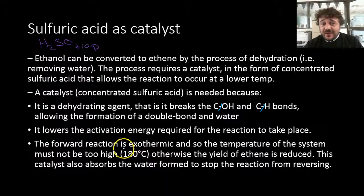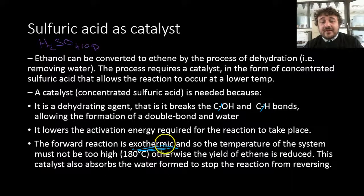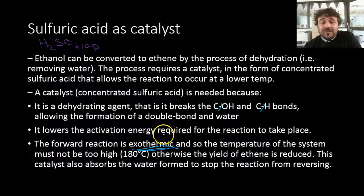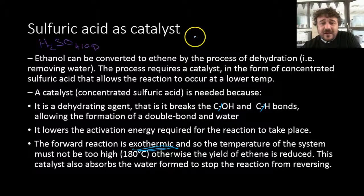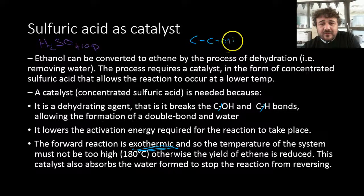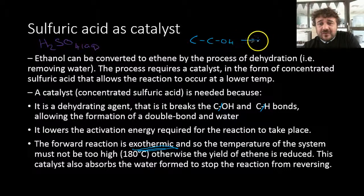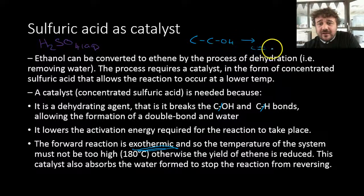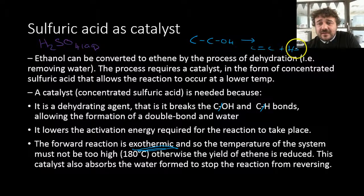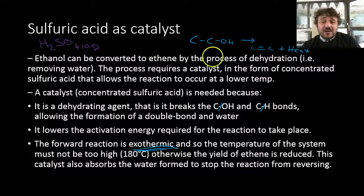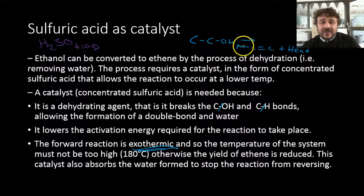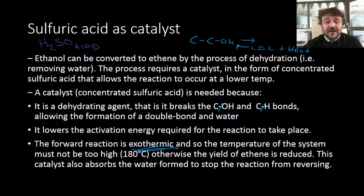Okay. Now, there's a reason. The forward reaction is exothermic. It's an exothermic reaction. So the temperature of the system can't be too high. Otherwise, ethene is reduced. And it's kind of like this, right? So if C, OH, we'll leave all the extra H's off, goes to this plus C. I'll make it so you can see it out of my head. And C plus heat. If you do it at too high a temperature, it will push the reaction the other direction to help get rid of the heat. So the catalyst absorbs the water and stops the reaction from reversing as well.